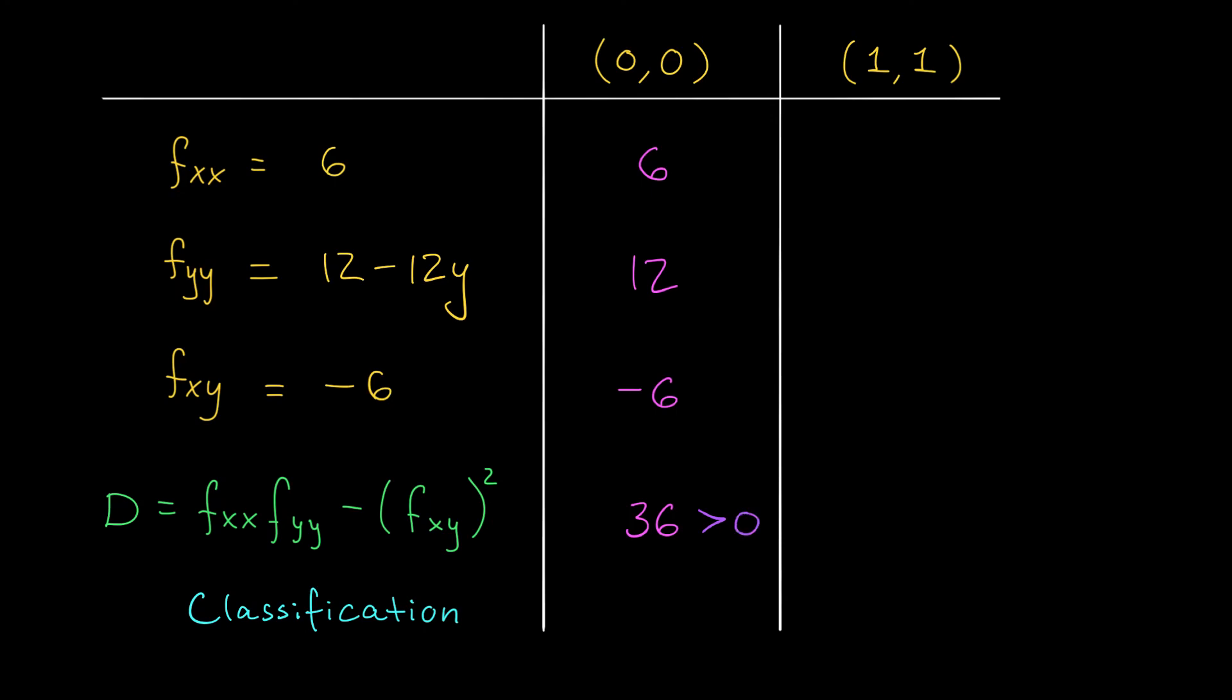Now, this is positive, right? What does our second derivative test say if we get a positive value for d? Well, it says that we have either a local max or a local min. How do we know which one? We have to look at the sign of either fxx or fyy. Doesn't matter which one. In this case, I'm going to look at fxx. fxx at (0,0) is 6. It's positive. If d is positive and fxx is positive, well, it means you have a local min. And that's our classification.